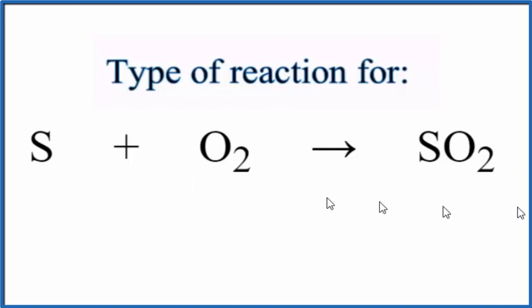So when we look at this reaction here, we see we have two reactants, the sulfur and the oxygen gas. These two, they combine. They come together to form just one thing, this product here, the sulfur dioxide gas.